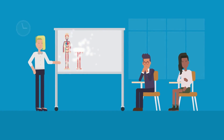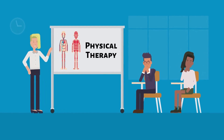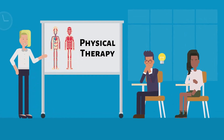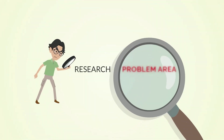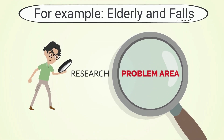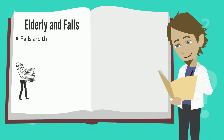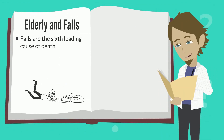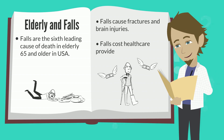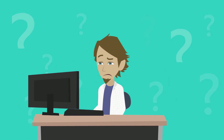Let us assume that you are in the health sciences and your major is physical therapy. You have to choose a topic based on an identifiable problem. Example one: first, identify a research problem area — for example, elderly and falls. From your research, you learn that falls are the sixth leading cause of death in elderly 65 and older in the USA. Falls cause fractures and brain injuries, and falls cost healthcare providers a lot of money.